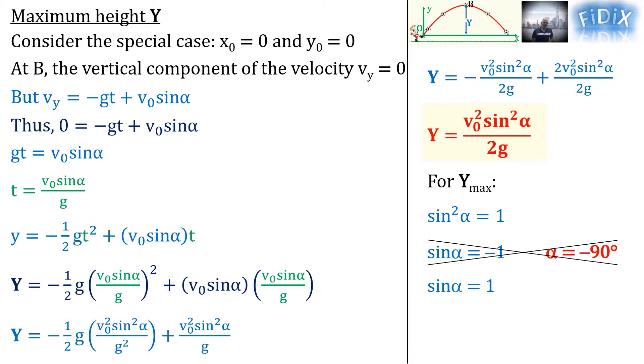The second solution is sin α equals one, thus α equals 90 degrees. This solution is accepted since the projectile is launched upward. In this case we can obtain the formula of Yₘₐₓ.